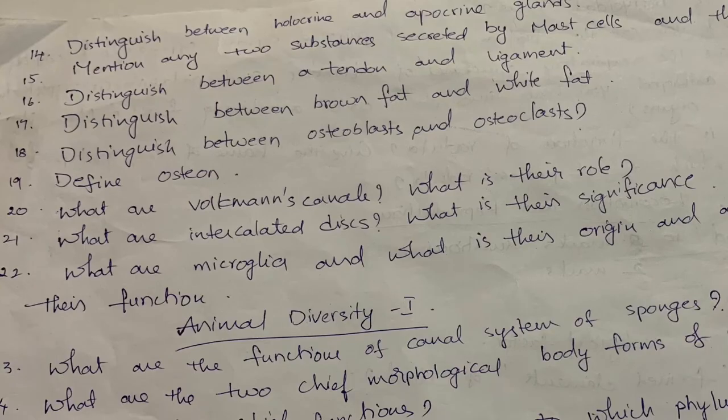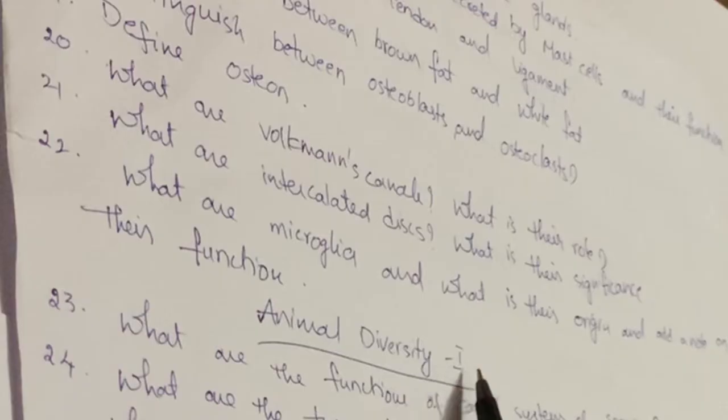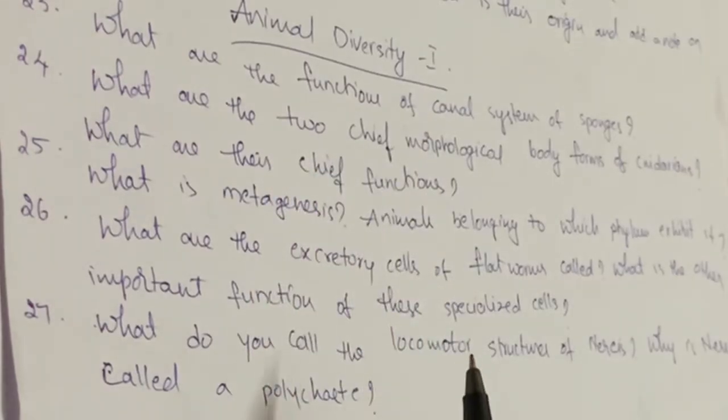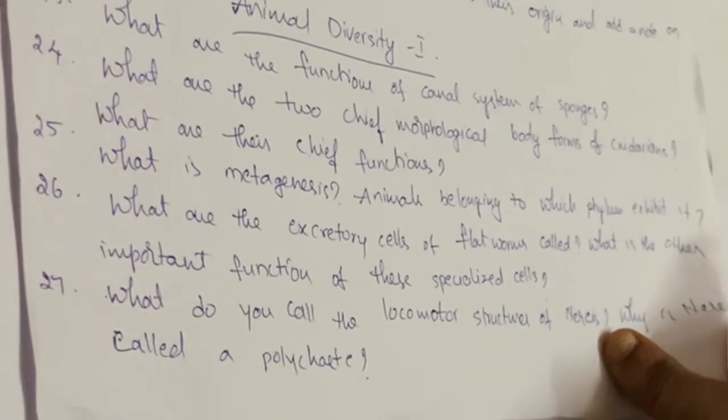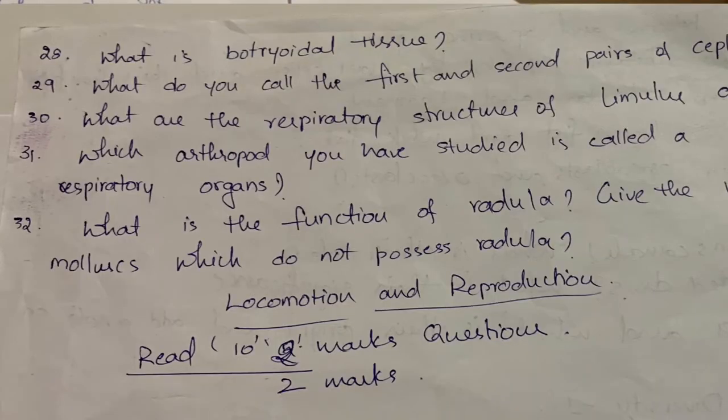This is also from Structural Organization. From Animal Diversity One, you will definitely get one two-mark question. These are the important two-mark questions of Animal Diversity. From Locomotion and Reproduction, you have to study all the ten two-mark questions.